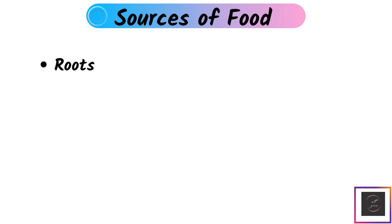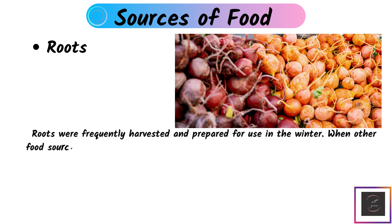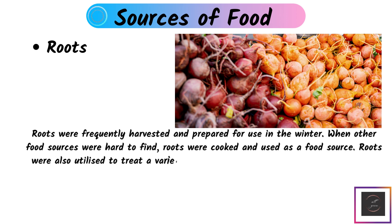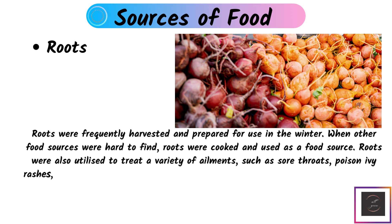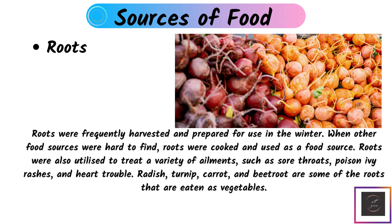Roots: Roots are frequently harvested and prepared for use in winter, when other food sources were hard to find. Roots were also utilized to treat a variety of ailments such as sore throat and heart trouble. Radish, turnip, carrot, and wheat root are some of the roots that are eaten as vegetables.